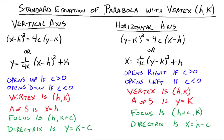We've got the standard equation for a parabola with a vertex h, k. There are two forms we could write. I like to isolate y and have y equals x squared, or x equals y squared if we're doing the horizontal axis. For the vertical axis, where x is squared and y is not squared, your parabola opens up if your c value is positive, and opens down if your c value is less than zero. The vertex is h, k — remember h goes with the x and k goes with the y. Once you know the vertex, you automatically know the axis of symmetry, which is a vertical line x equals the x part of the vertex.